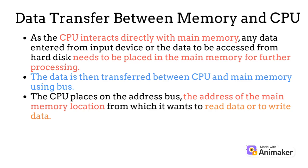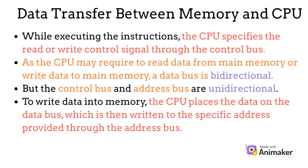As the CPU interacts directly with main memory, any data entered from an input device or the data to be accessed from the hard disk needs to be placed in the main memory for further processing. The data is then transferred between the CPU and main memory using the bus. The CPU places on the address bus the address of the main memory location from which it wants to read data or to write data.